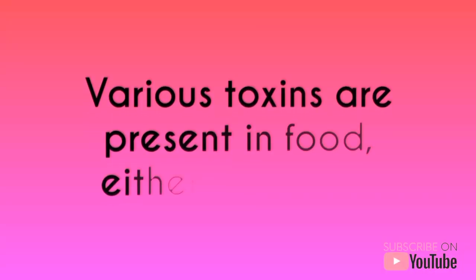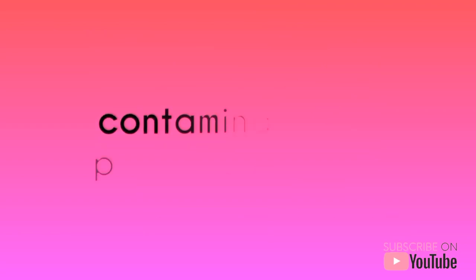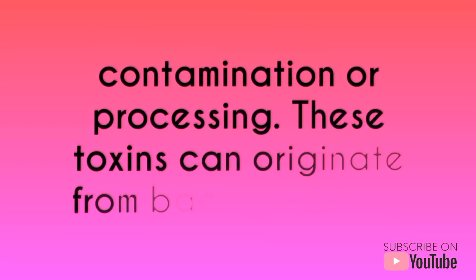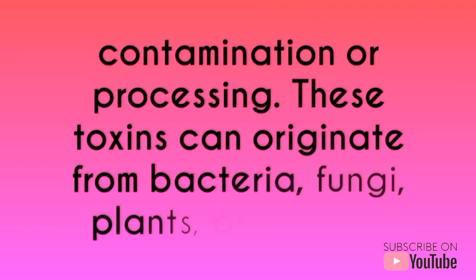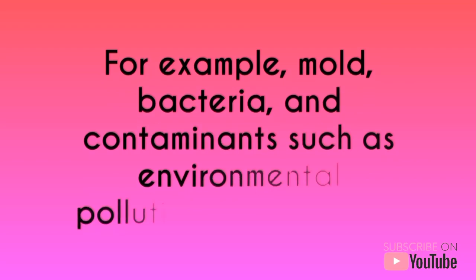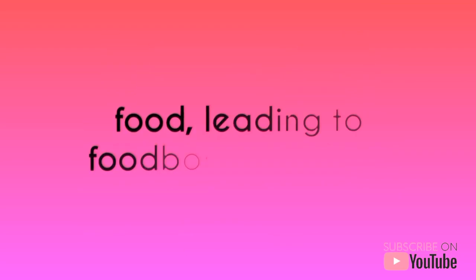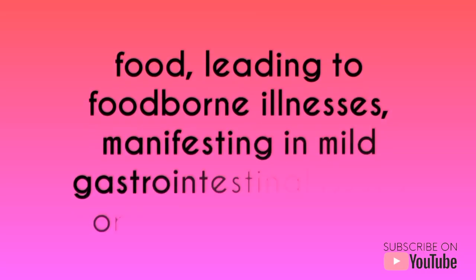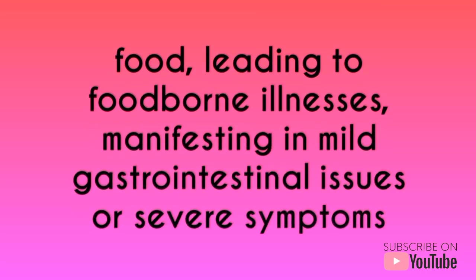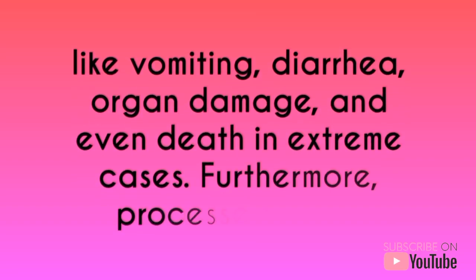Various toxins are present in food, either occurring naturally or introduced through contamination or processing. These toxins can originate from bacteria, fungi, plants, or animals. For example, mold, bacteria, and contaminants such as environmental pollution can produce toxins in food, leading to foodborne illnesses manifesting in mild gastrointestinal issues or severe symptoms like vomiting, diarrhea, organ damage, and even death in extreme cases.